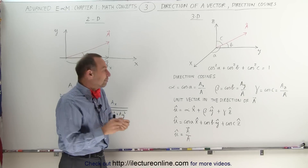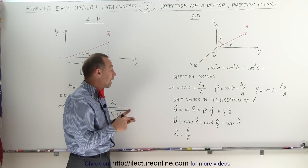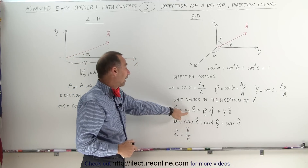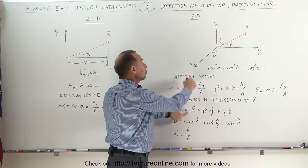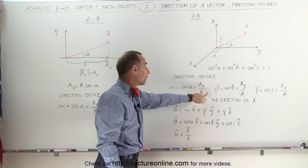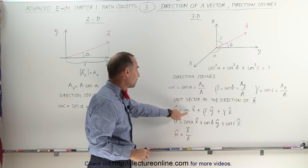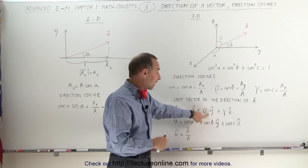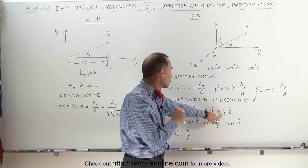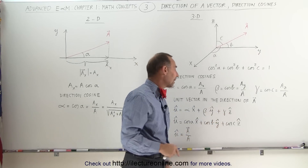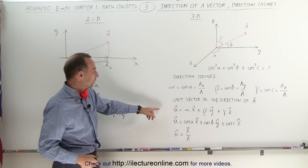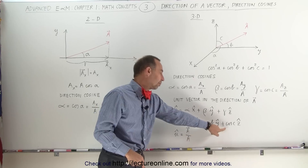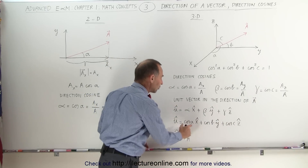If we want to define a unit vector in the direction of vector A, we can do that using the direction cosines. The unit vector is defined as alpha times the x-direction, plus beta times the y-direction, plus gamma times the z-direction. Equivalently, this is the cosine of A times the x-direction, plus the cosine of B times the y-direction, plus the cosine of C times the z-direction — another form of expressing direction cosines.